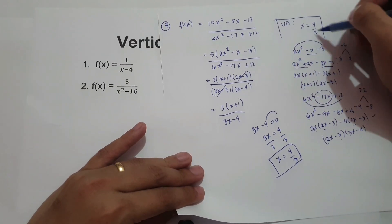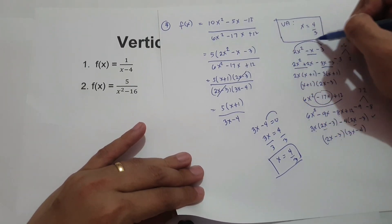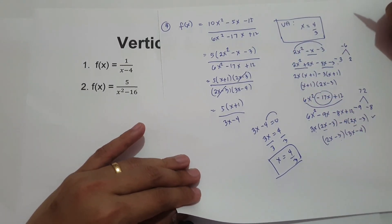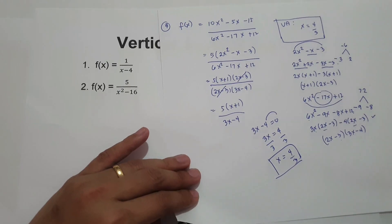That's it. That is the rule in finding the vertical asymptote.